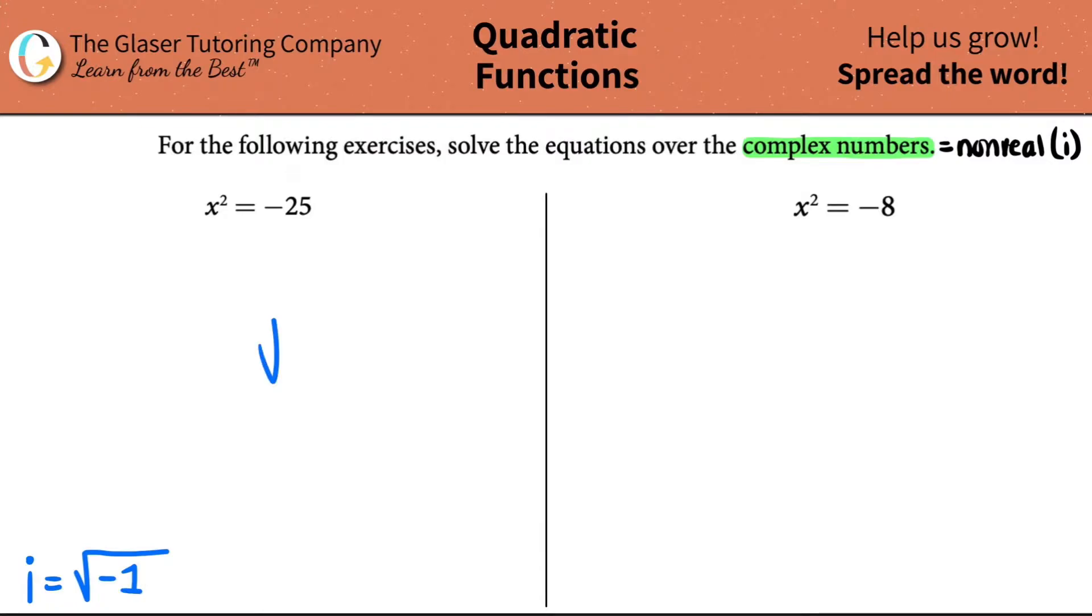Remember, if we're taking square roots of any number, if we want a real value, the number has to be a positive number in here. So the square root of 25 would be 5, the square root of 36 would be 6, right? So when we're dealing with negative square roots, that's when we have complex numbers. That's when the I value comes in.